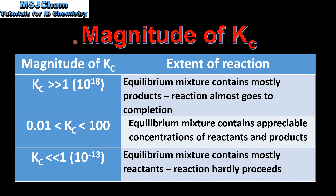Next we will have a look at the magnitude of Kc. The magnitude of Kc tells us if the equilibrium mixture will contain mostly products, mostly reactants, or appreciable amounts of both. If the value for Kc is very large, for example 10 to the power of 18, then the equilibrium mixture will contain mostly products — the reaction almost goes to completion.